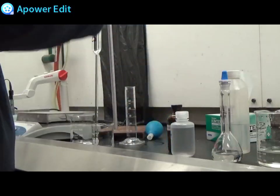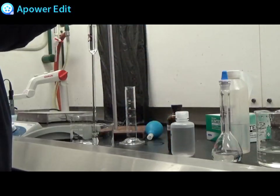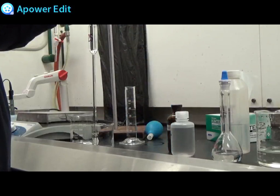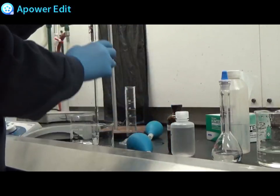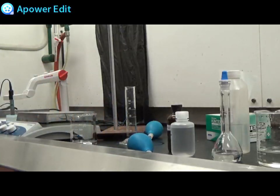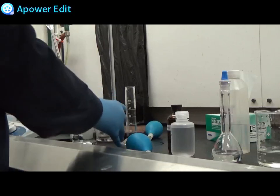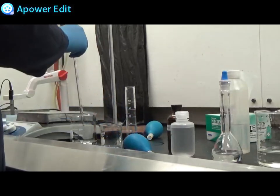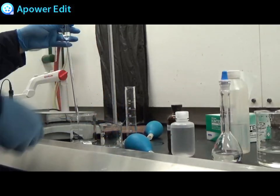You do need to see this at eye level so take the beaker and use it to help you see the line at eye level. Perfect. Now transfer it to your titration beaker.